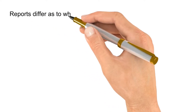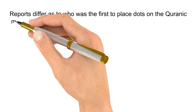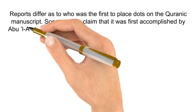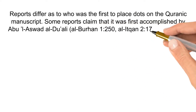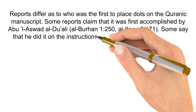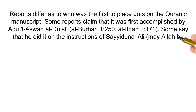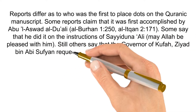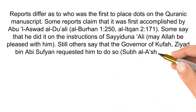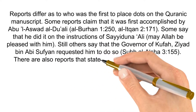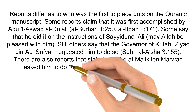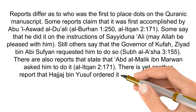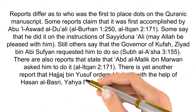Reports differ as to who was the first to place dots on the Quranic manuscripts. Some reports claim it was first accomplished by Abu al-Aswad al-Duali. Some say that he did it under the instruction of Sayyidina Ali. Still others say that the governor of Kufa, Ziyad ibn Abi Sufyan, requested him to do so. There are also reports that state that Abdul Malik ibn al-Murwan asked him to do it.